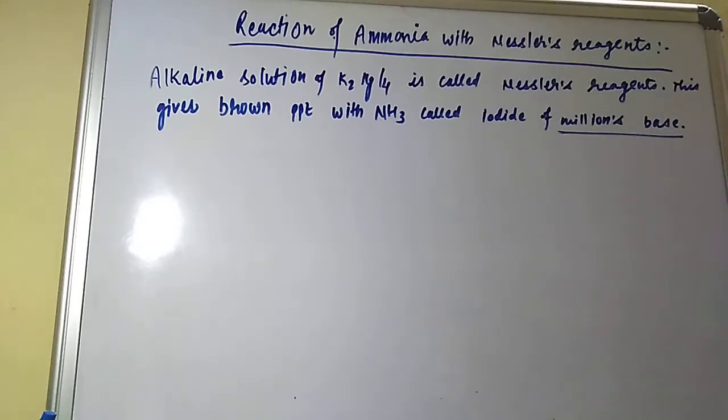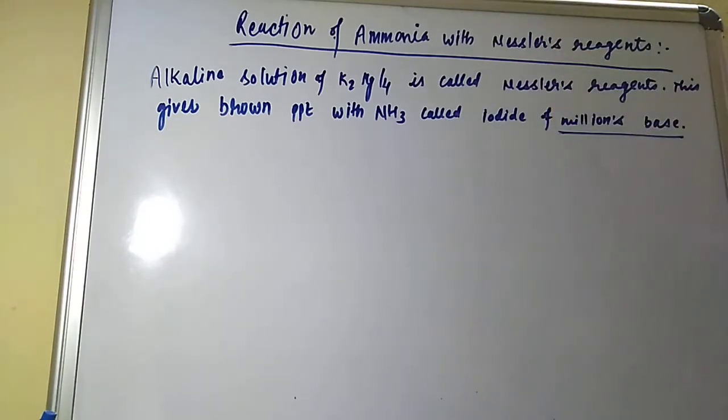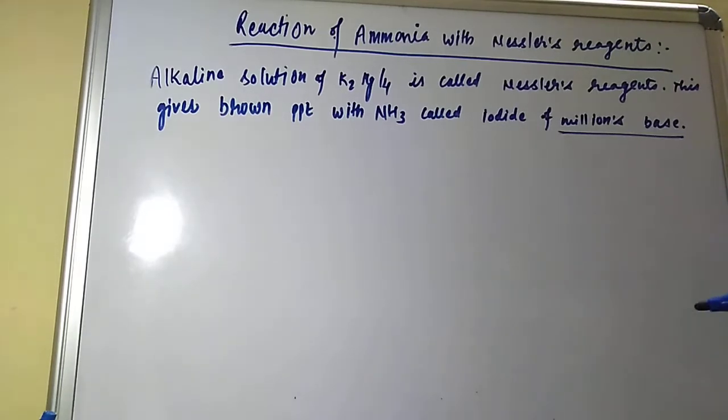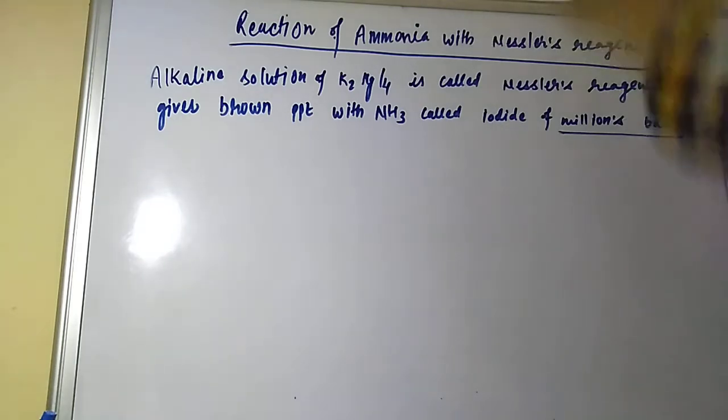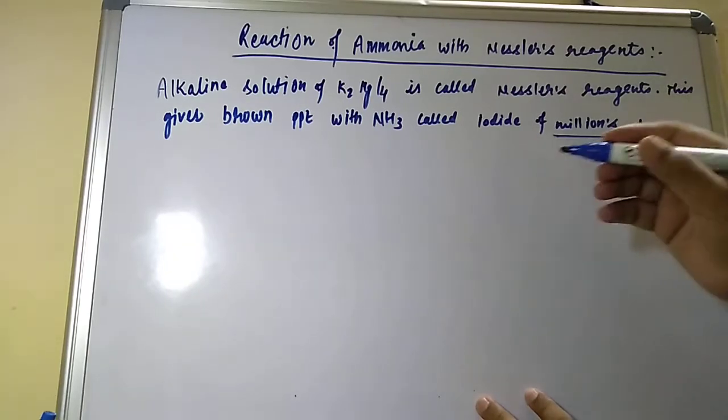Today I'm going to explain the important chemical properties of ammonia. Let's see the reaction of ammonia with Nessler's reagent. This is important because Nessler's reagent gives the Millon's base, and this Millon's base is used to identify foods.